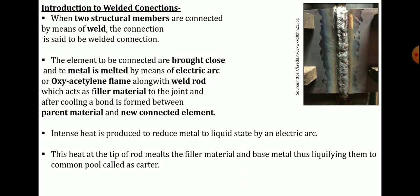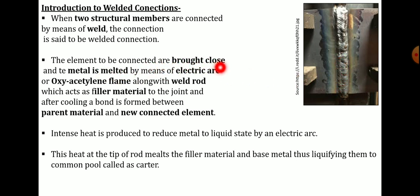When two structural members are connected by means of weld, the said connection is called a welded connection. In the figure, two elements — element 1 and element 2 — are connected with the help of vertical welding. The elements to be connected are brought close to each other and the metal is melted by means of electrical arc or oxy-acetylene flame along with a weld rod, which acts as filler material. After cooling, the bond is formed between the parent material and the connected element.